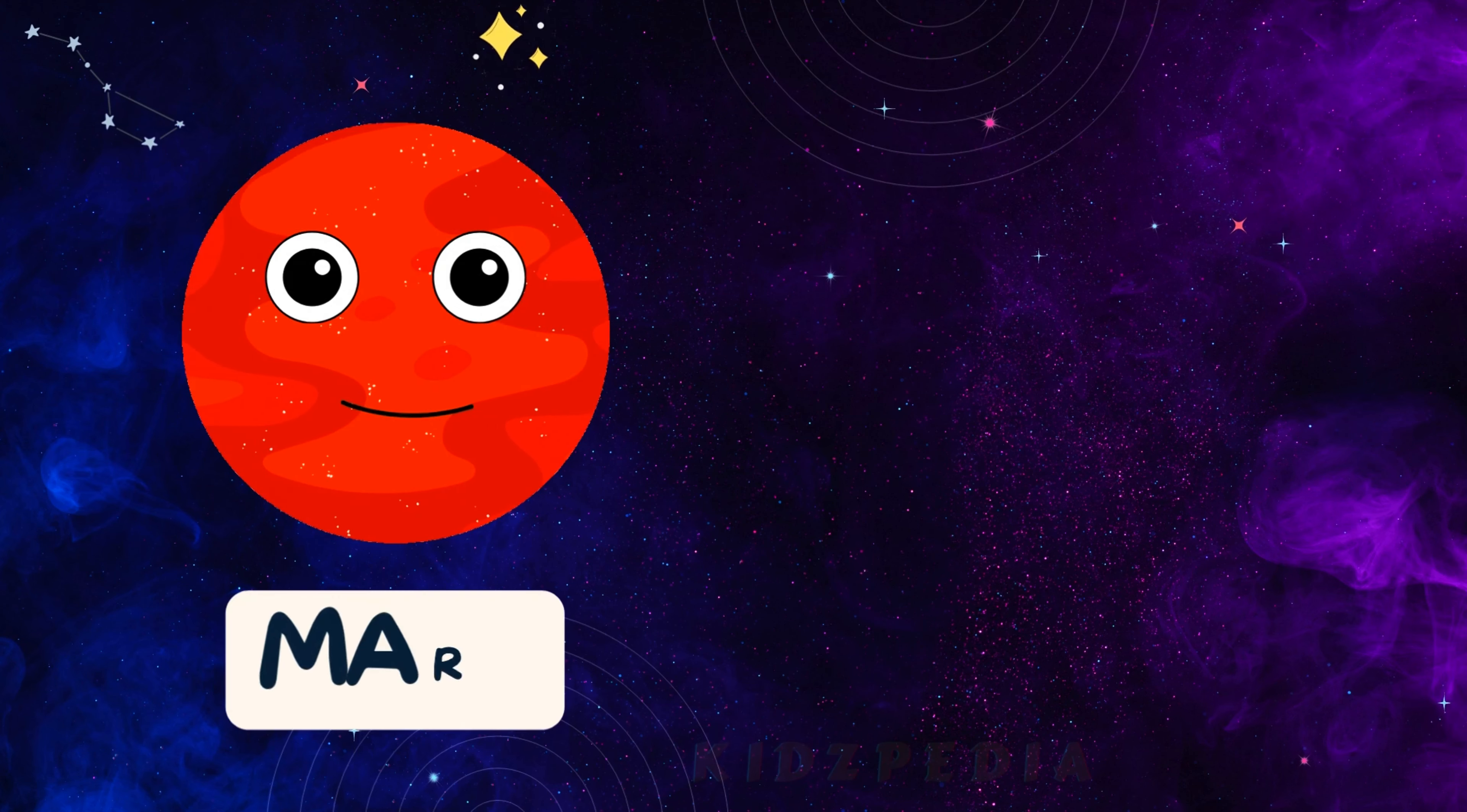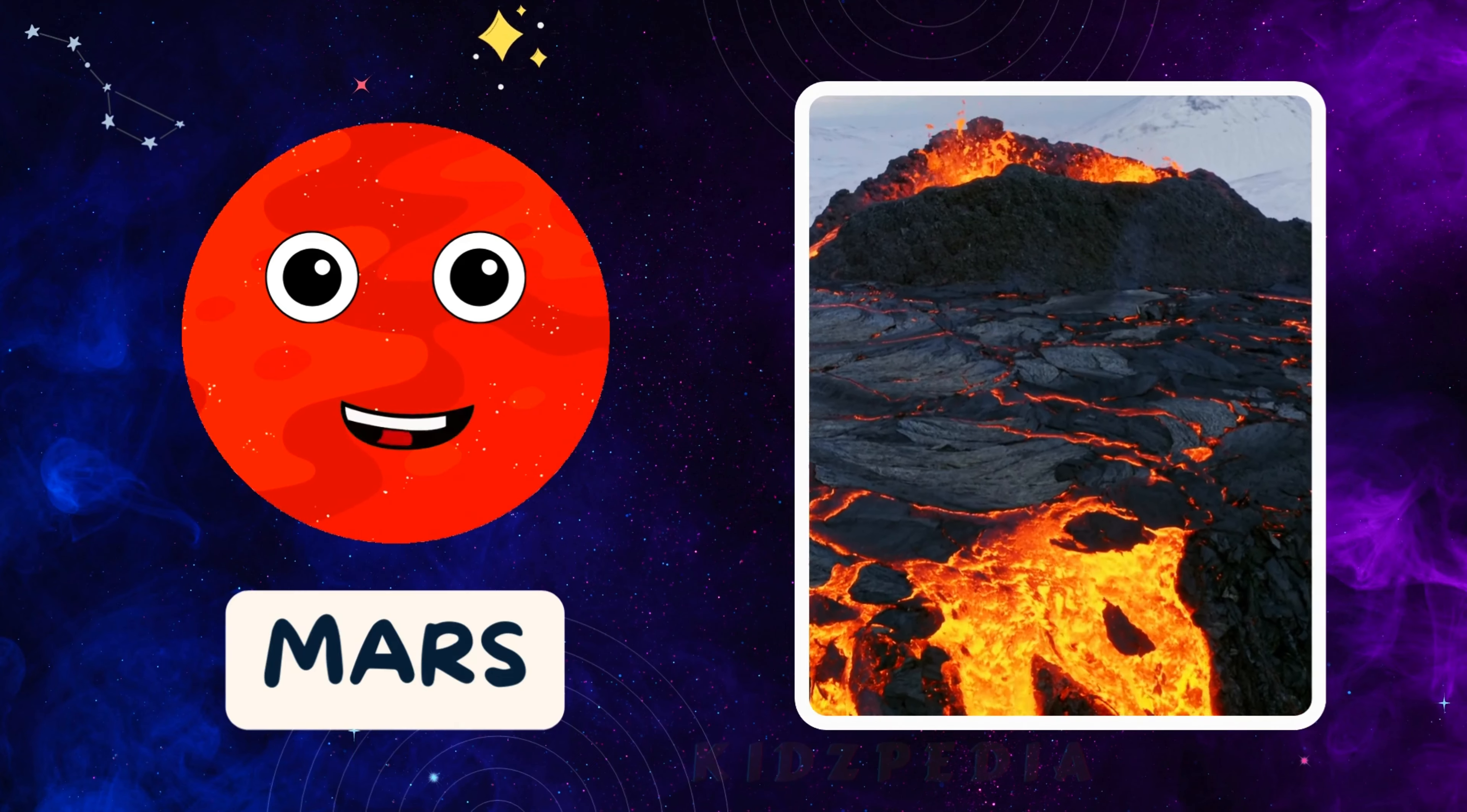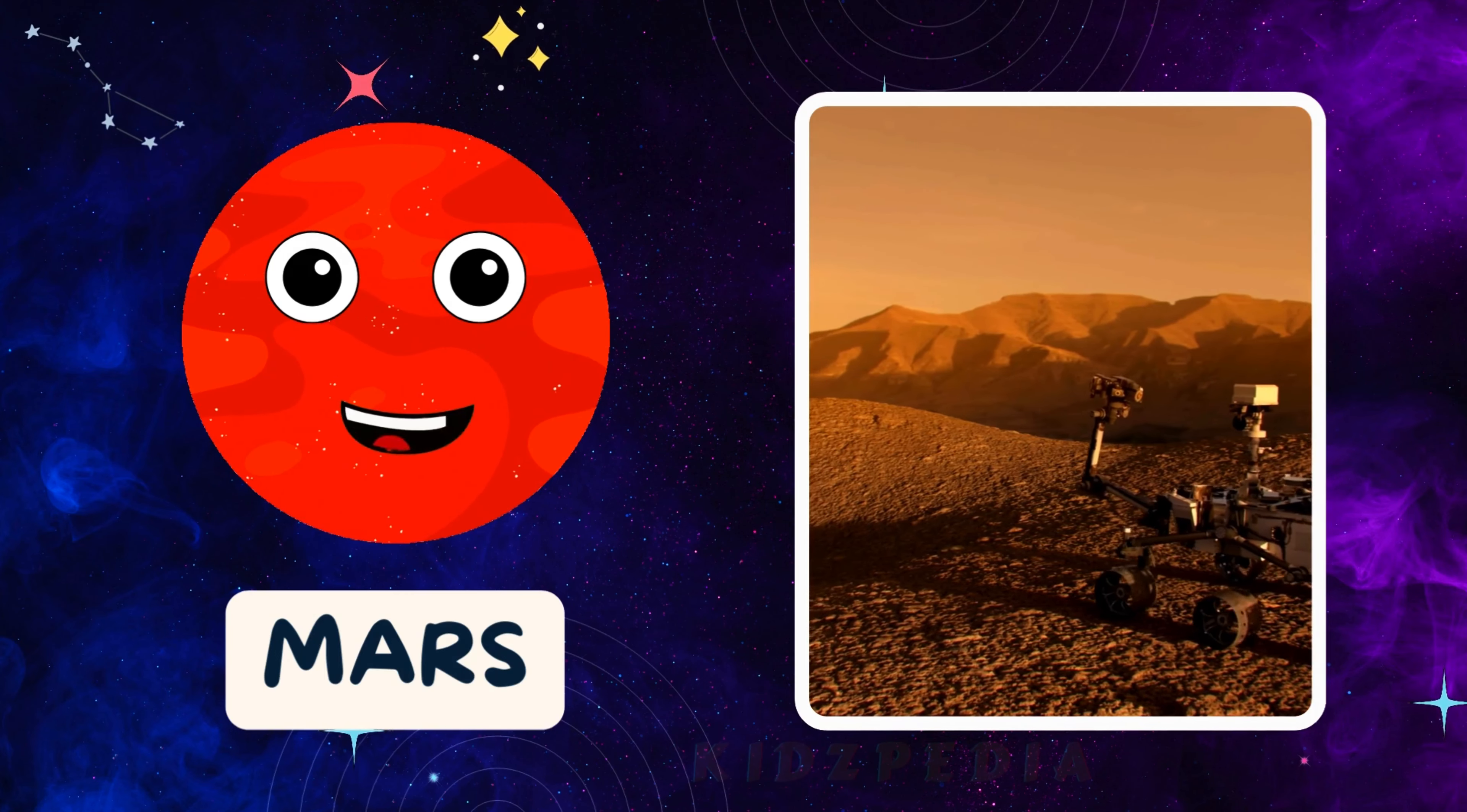Hi, kids. I'm Mars, fourth planet from the sun, and I'm known as the red planet because of my rusty, red color. I have the tallest volcano and the biggest canyon of any planet. I'm colder than Earth, but scientists are really excited about me because I have seasons and ice at my poles.